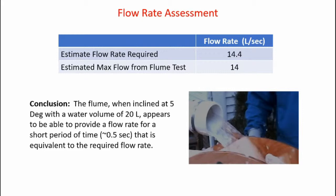The estimated flow rate required by earlier experimentation requires 14.4 liters per second. The maximum flow rate from the flume test comes up with approximately 14 liters per second. So in conclusion, the flume, when inclined at five degrees with a water volume of 20 liters, appears to be able to provide the flow rate for a short period of time, approximately half a second, equivalent to the required flow rate to get the system to spin at the proper speed.